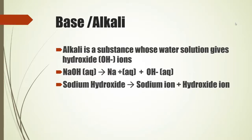Next is base or alkali. Alkali is a substance whose water solution gives hydroxide ions (OH⁻). In acids, dissociation gives hydrogen ions, whereas in bases, dissociation gives OH⁻ ions — this is a major difference. For example, NaOH (sodium hydroxide), when it dissociates, gives Na⁺ ions plus OH⁻ ions. This OH⁻ ion getting separated indicates that it is a base.